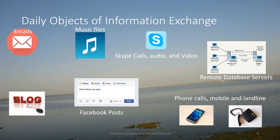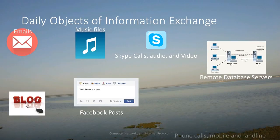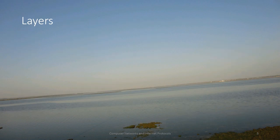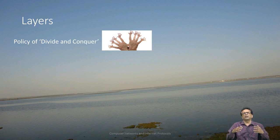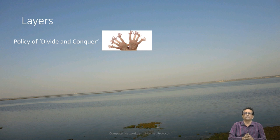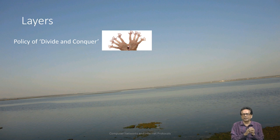The entire course will be learning about how this thing actually happens from within. The network is divided into components called layers. They are there because there is a policy of dividing and conquering. The entire networking idea is divided into different components, and those components are known as layers.